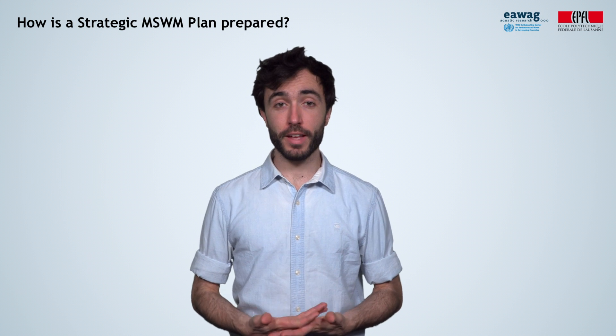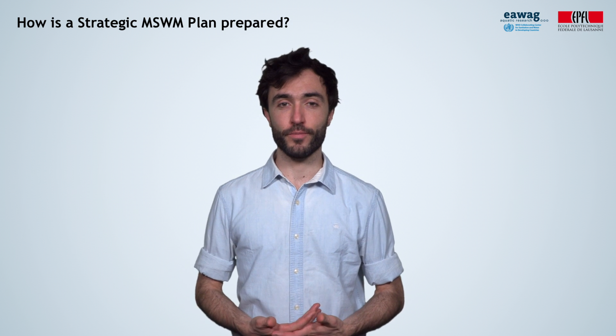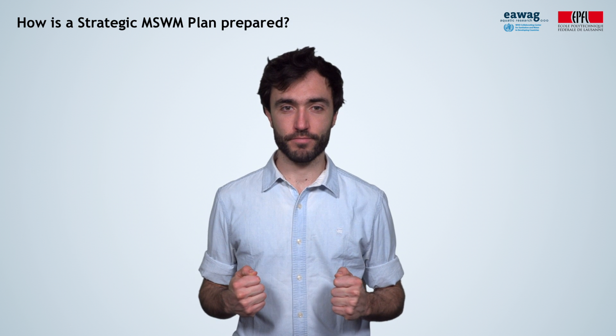The planning guide includes seven steps that we will cover in the next slides. The diagram highlights two important aspects. First, the process has a lot to do with the management of relationships and building consensus among stakeholders. And second, it is an iterative process, including regular revision and updates.